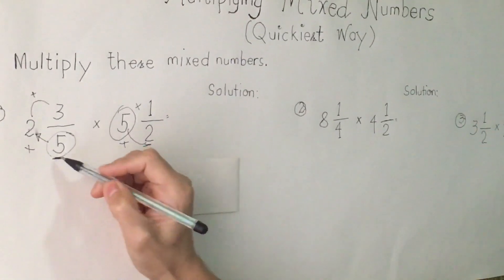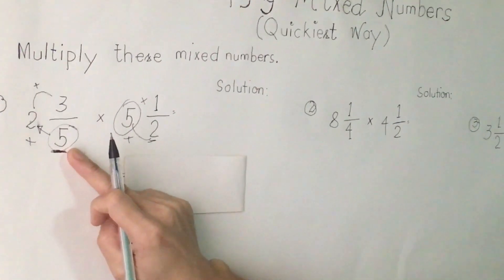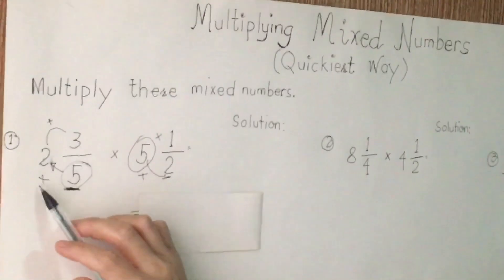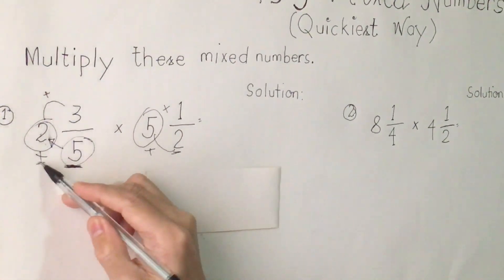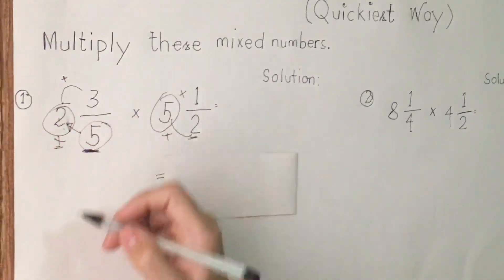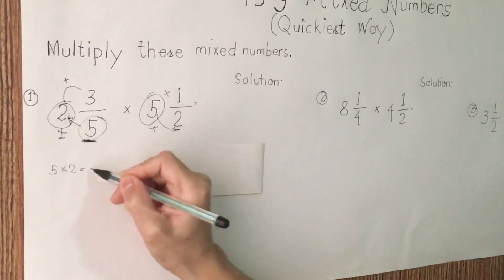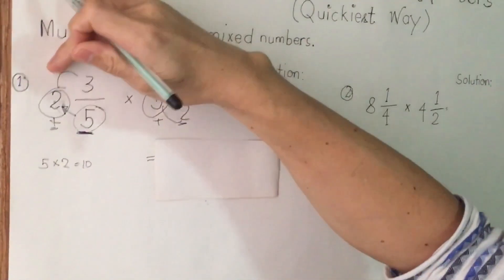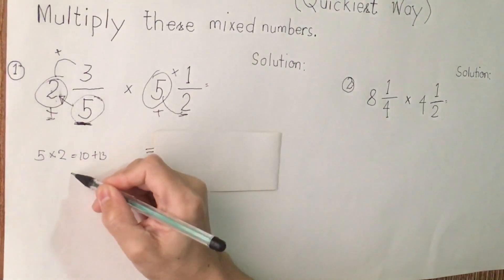First, I am going to multiply the first denominator of the first fractions, which is 5, then multiply to the whole number, which is 2. Then I put here a multiplication symbol. I am going to multiply 5 times 2. The answer is 10.